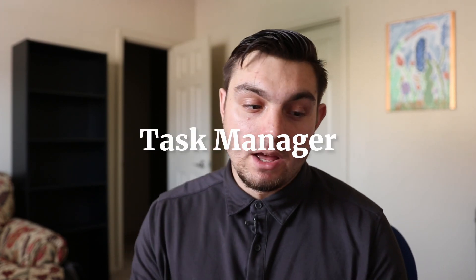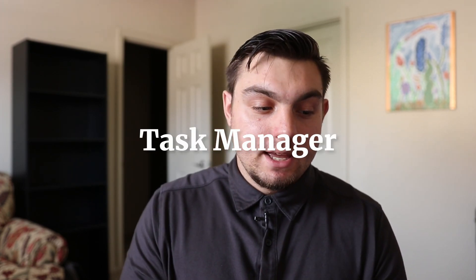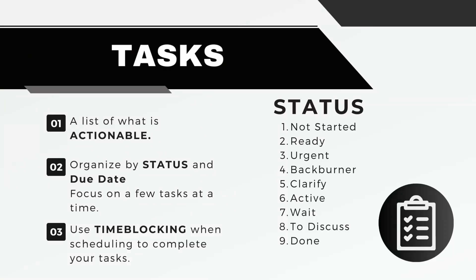The second part is the task manager. It's best to have one place for all of your tasks, and you can organize them based on your role. A task list is all of the associated tasks — have a place where you put your to-dos. Rather than keeping them randomly in your head or on post-it notes, keep putting them in one place. A task list is a list of what is actionable — things you have to do, something that can be completed.